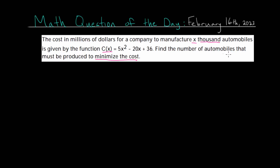So we're looking for the amount of automobiles that will produce the least amount of cost for the company. To answer a question like this, there are two main approaches. We could use calculus and find the derivative, or we could use just basic algebra. Notice this is a quadratic and we can use the techniques of algebra one to answer this question. Either way will work and we'll get the same answer, and we'll look at both in this video.